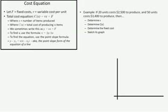We're going to talk about a cost equation. A cost equation is an equation that describes in economics how much it costs to produce X number of items if we are a business. The total cost equation is given by C of X — you can see it in the top corner — C of X equals V times X plus F.